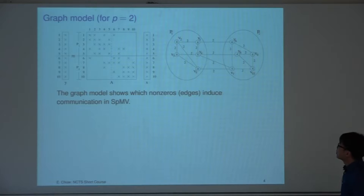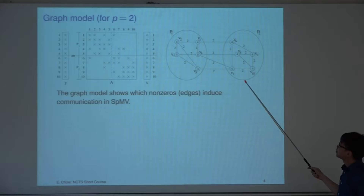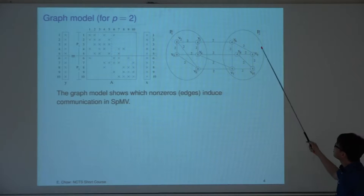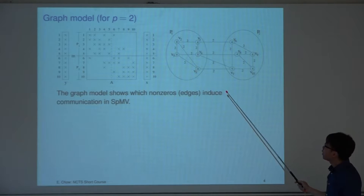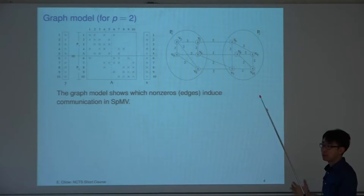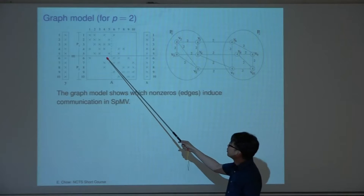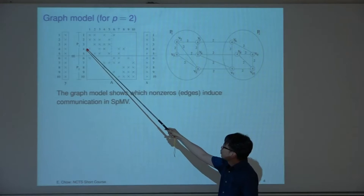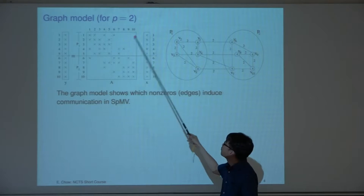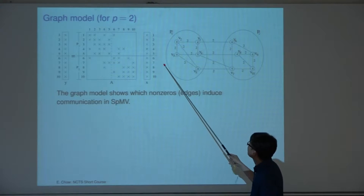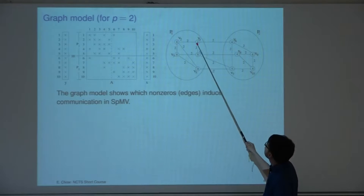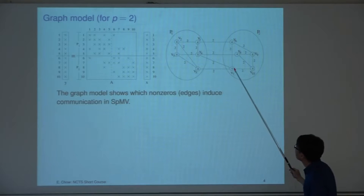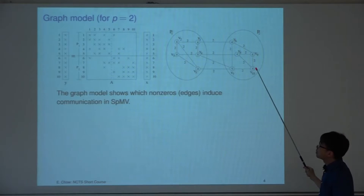Here is the graph of the sparse matrix. These two large ovals show how the vertices have been partitioned. Variables 1 to 5 are in the first partition — v1, v2, v3, v4, v5 — and 6 to 10 are in the second partition. These are the edges between vertices, and some edges cross between two partitions.